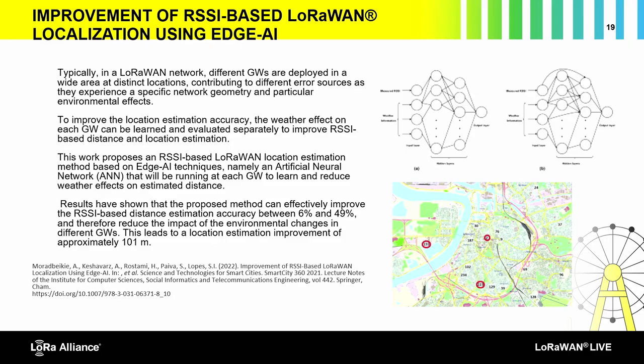RSSI-based localization in LoRaWAN is a holy grail — simple, cheap $10 tags that can geolocate something. The problem is accuracy when you have at least four gateways, it still isn't good enough for many use cases. One paper tackled this by incorporating weather conditions into a machine learning model, since weather affects received signal strength. The result: accuracy improved by 100 meters. The paper tells you how to do it — implement it and your accuracy improves significantly with minimal additional effort.